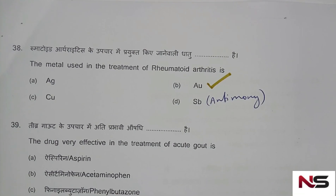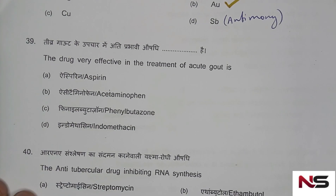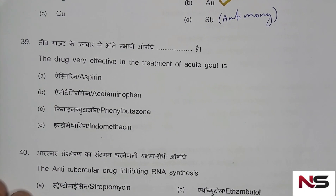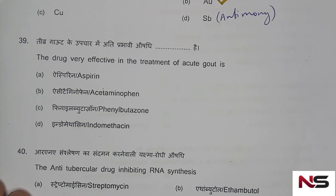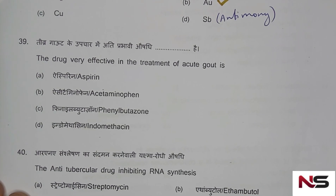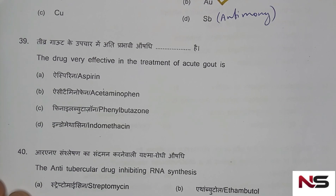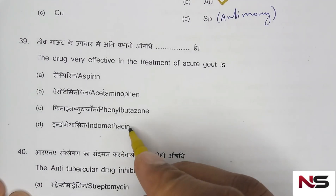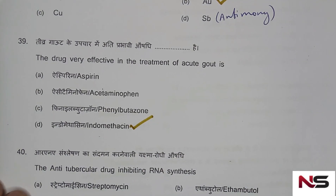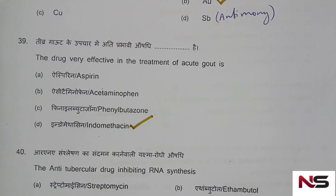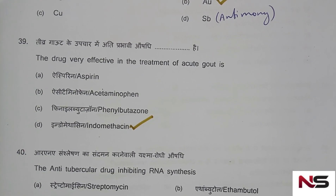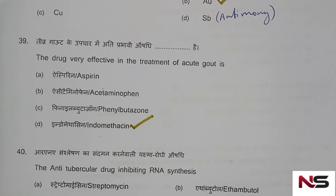Question 39: The drug most effective in treatment of acute gout. Options are: aspirin, acetaminophen (paracetamol), phenylbutazone, indomethacin. The correct answer is indomethacin. NSAIDs are used for treatment of acute gout, but indomethacin is the more preferred choice.